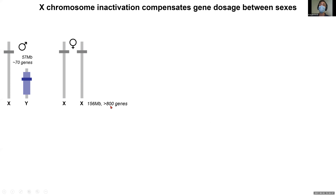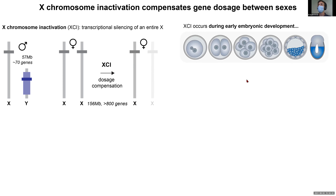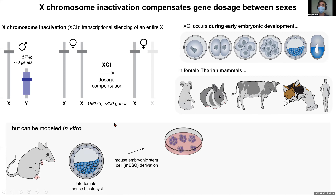Females therefore have to cope with double expression of X-linked genes, which is problematic. Evolution has selected a female-specific dosage compensation mechanism called X chromosome inactivation, or XCI, wherein one of the two X chromosomes in female cells is transcriptionally silenced across its entirety. This happens during early embryonic development in all female therian mammals and can be modeled in vitro using female mouse embryonic stem cells, which have two active X chromosomes and undergo XCI upon differentiation.